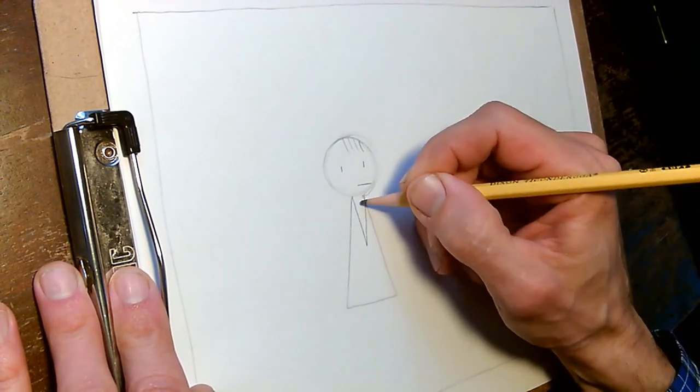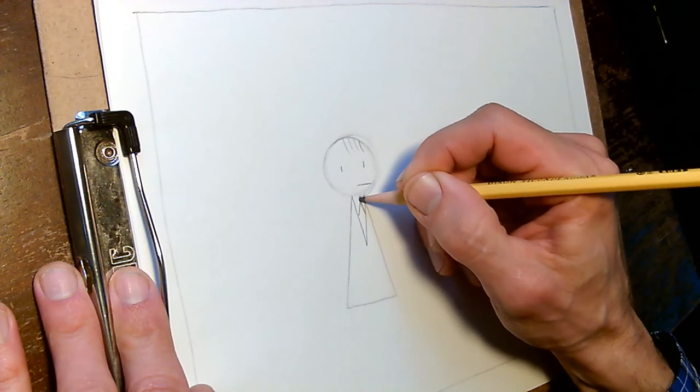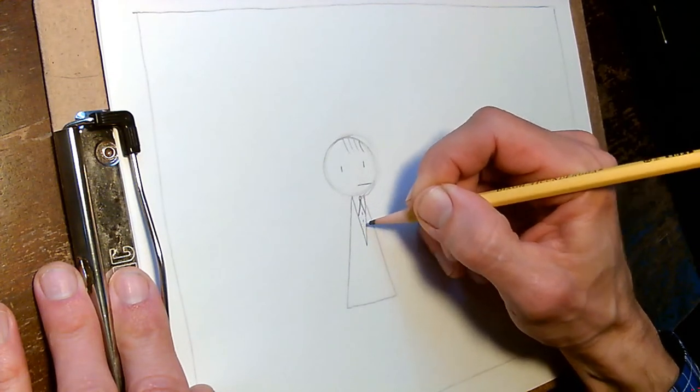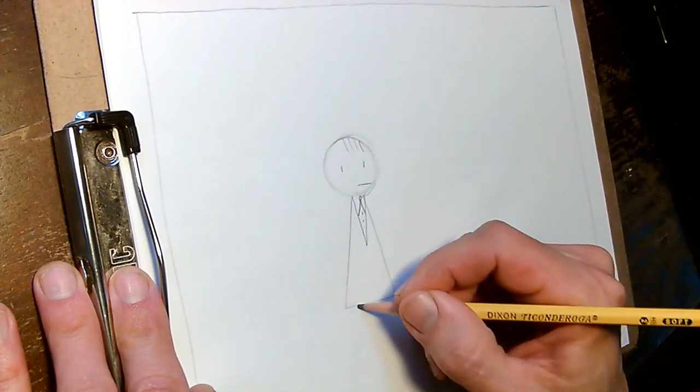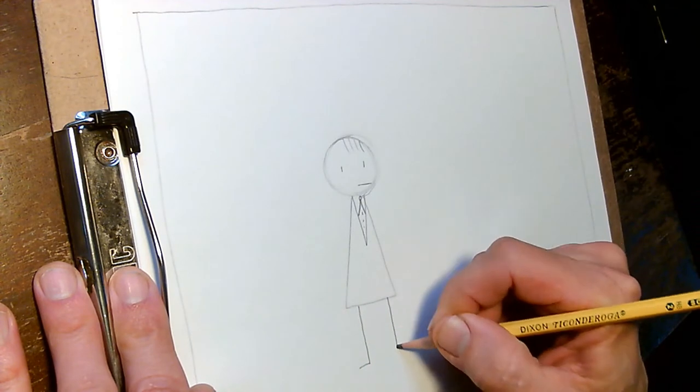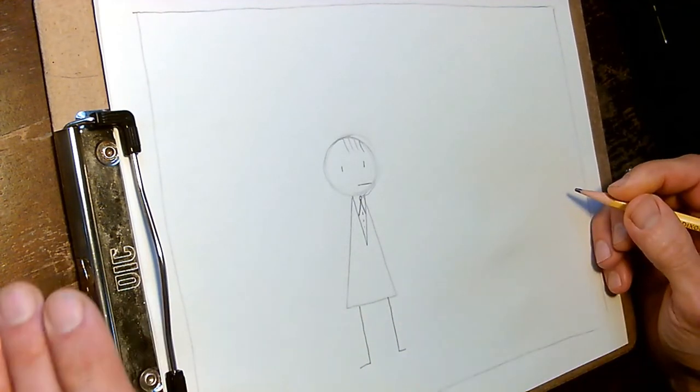And since he's not enlisted yet he's in civilian garb so he has a collar and buttons but not a uniform. I think we'll give him two legs here and two arms of course.